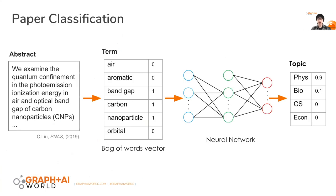So first, let's take a look at a very classical machine learning problem: classification. In this example, we are given a journal paper, and we want to classify this paper — we want to know the topic. For example, it can be a physics paper, a biology paper, a computer science paper, or an economics paper.